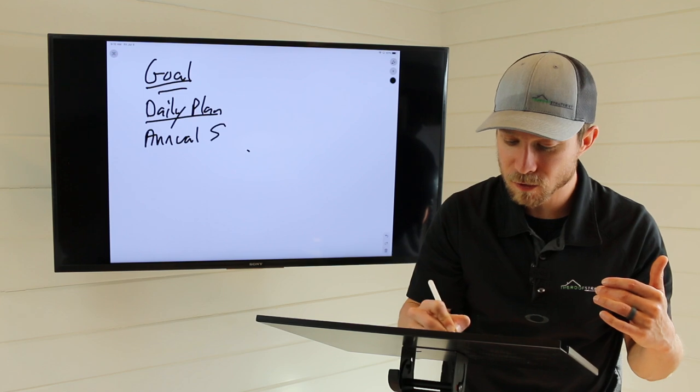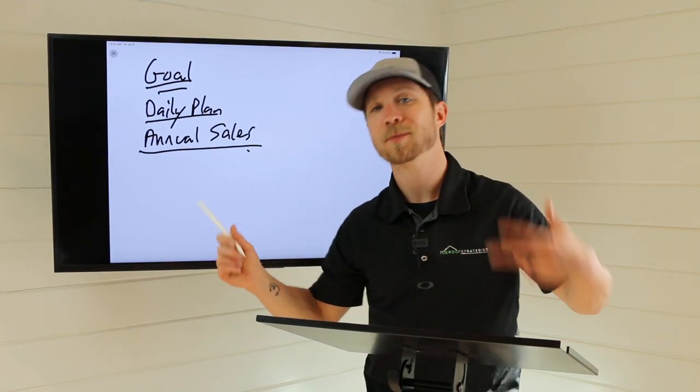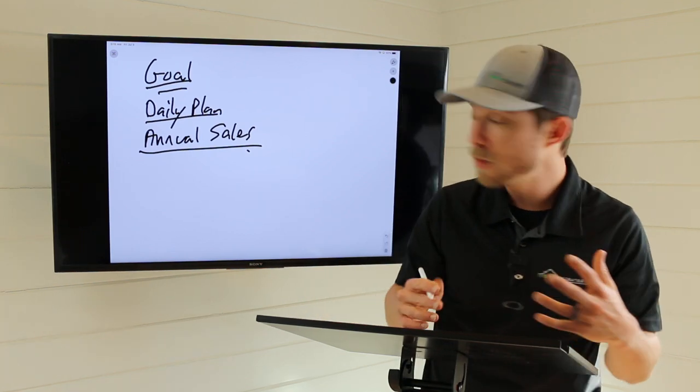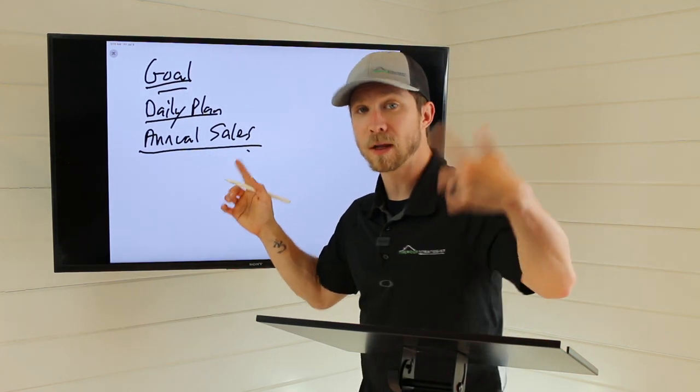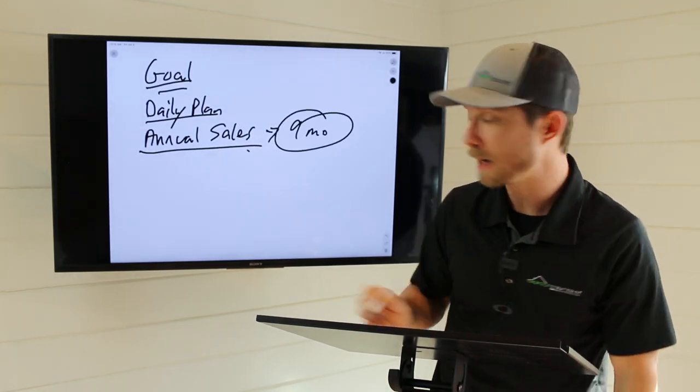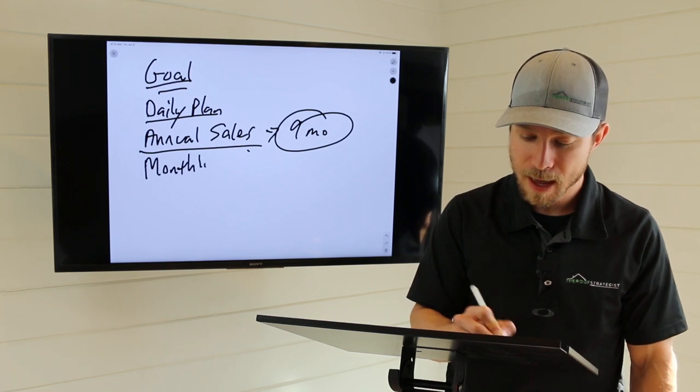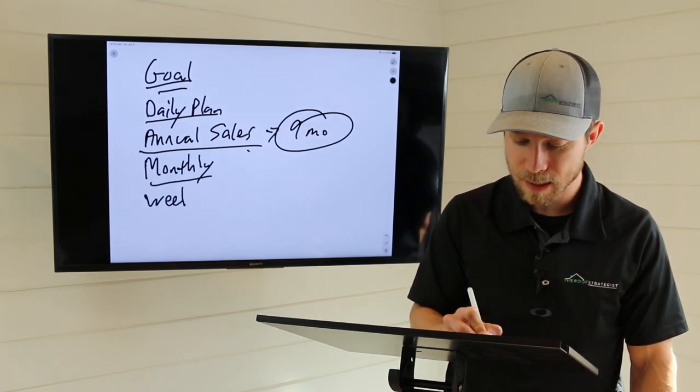And by the way, annual sales are daunting to say hey I have to sell a hundred jobs, that's a lot. So we want to break that. By the way, we can't do this in 12 months, we have to sell and collect. So annual sales, which I shortened to nine months. That's just my plan. Nine months, which then we break down to monthly so we can track it, but most importantly is weekly.